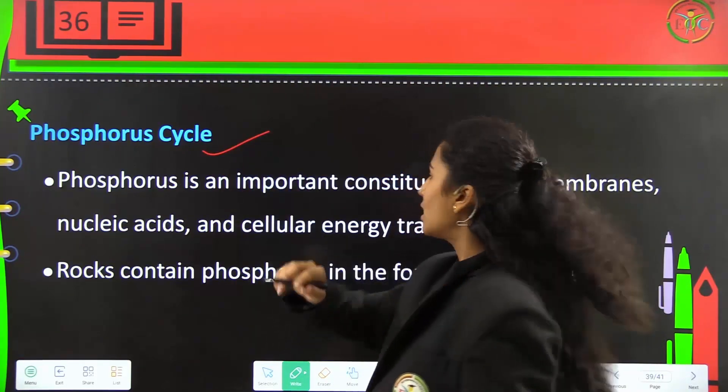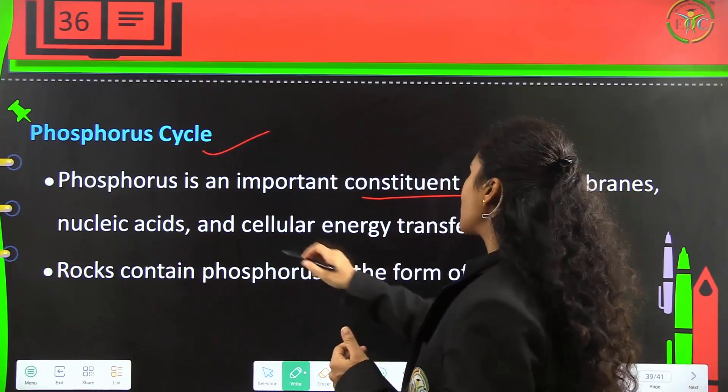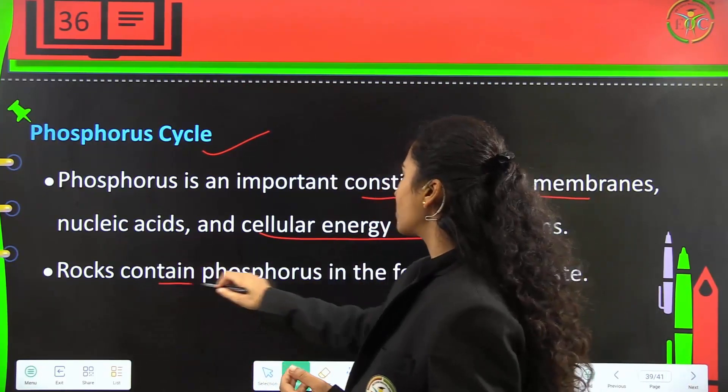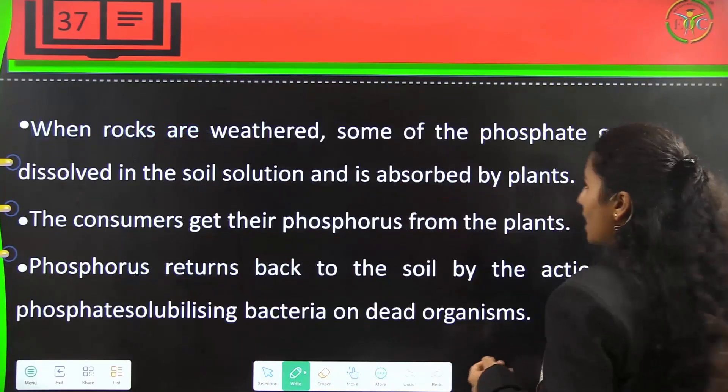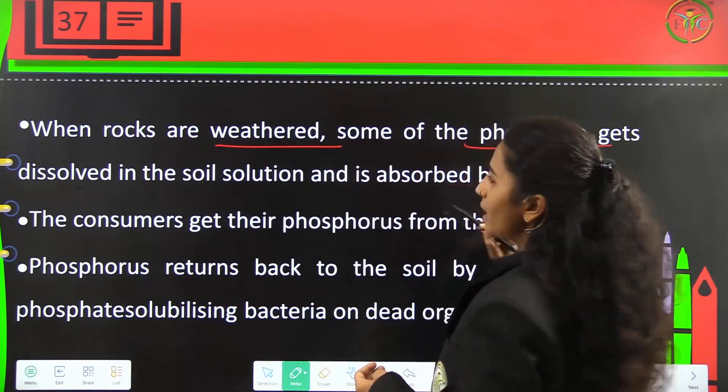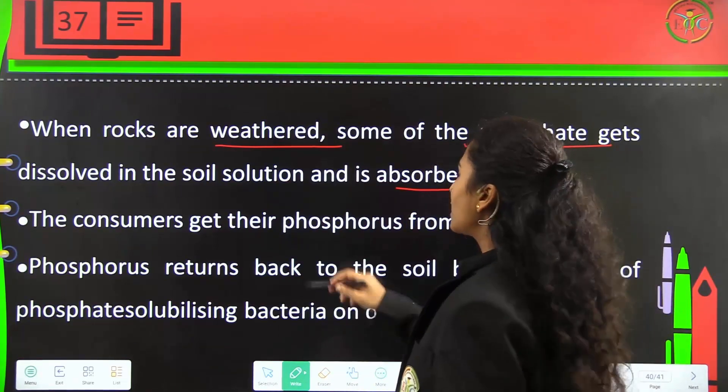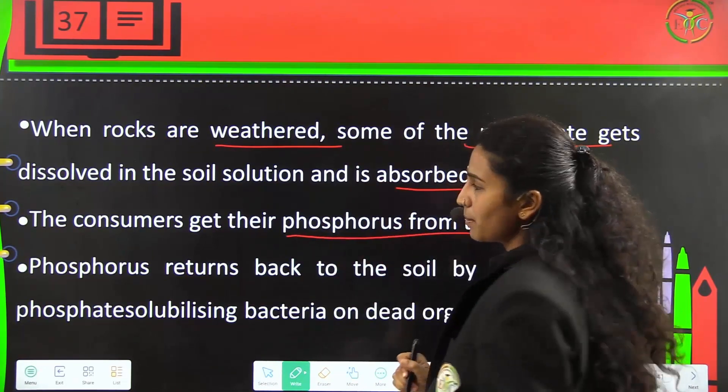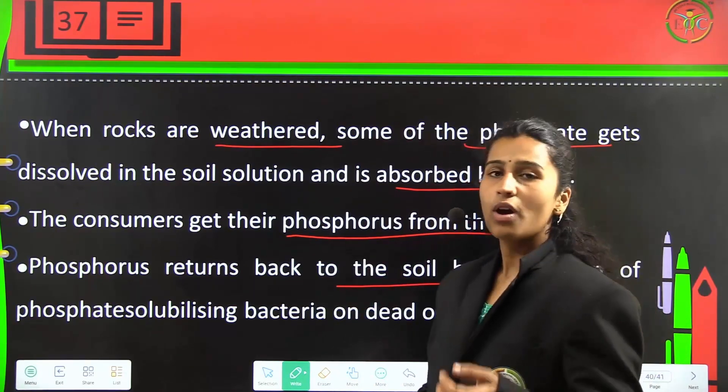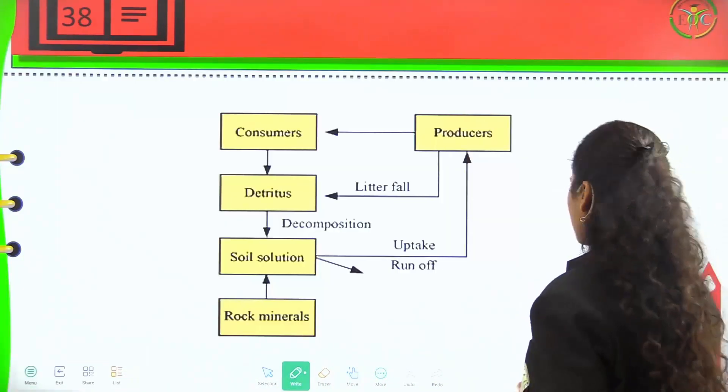Phosphorus cycle: Phosphorus is an important constituent of cell membranes, nucleic acids, and cellular energy transfer systems. Rocks consist of phosphorus in the form of phosphate. When rocks are weathered, some phosphate dissolves in soil solution and is absorbed by plants. Consumers get their phosphorus from plants, and phosphorus returns to the soil by the action of phosphate-solubilizing bacteria on dead organisms.